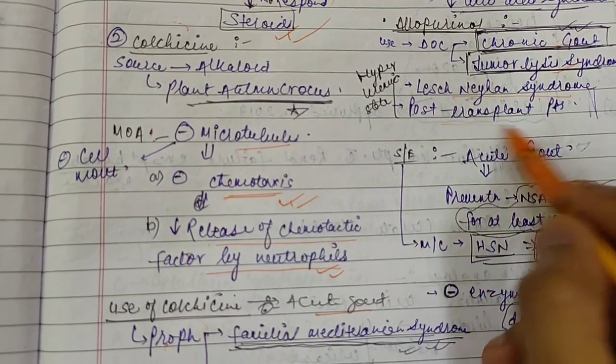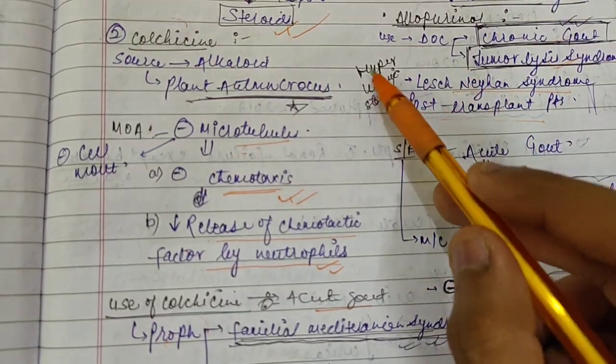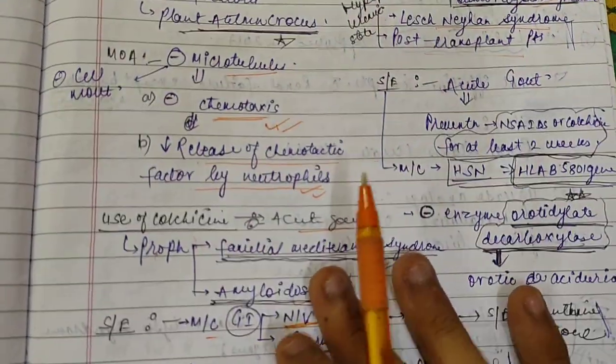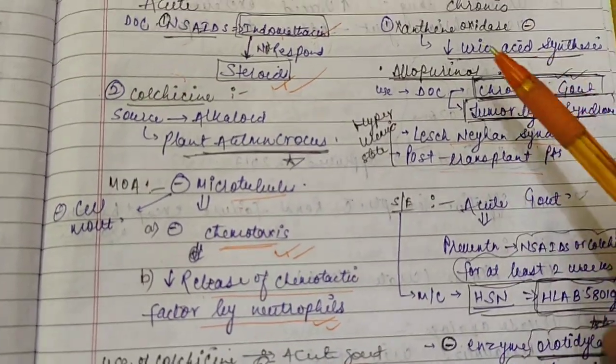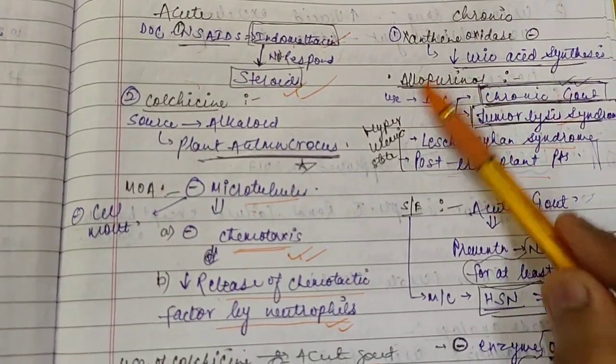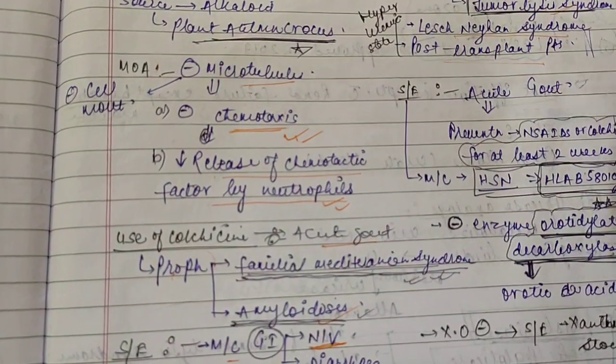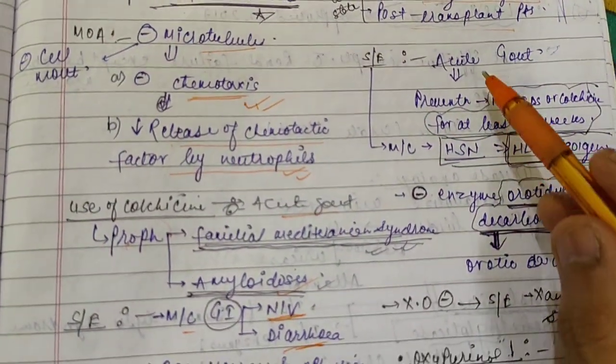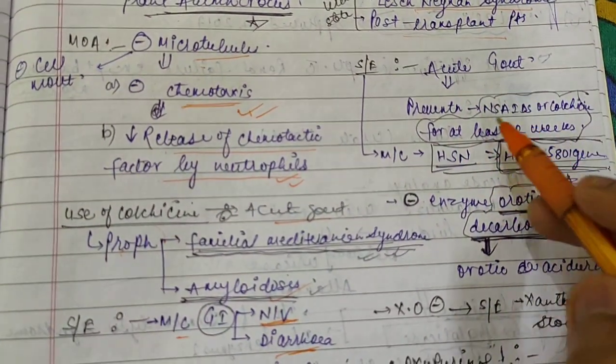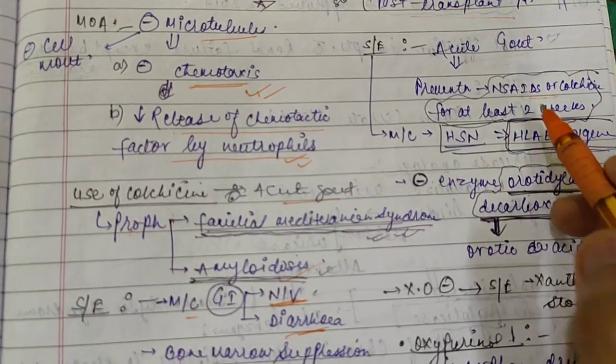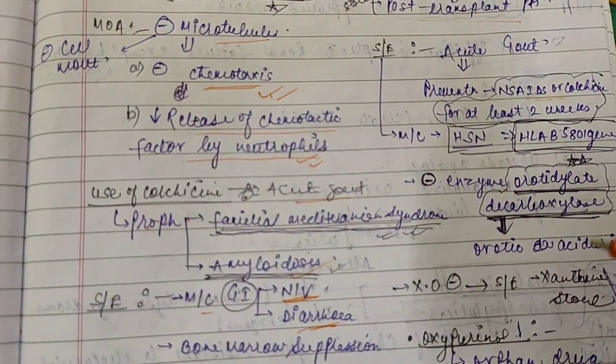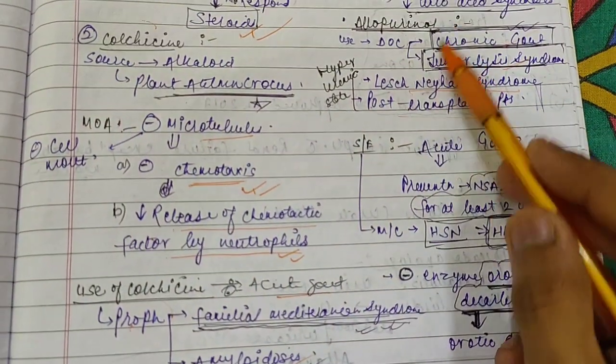Lesch-Nyhan syndrome and post-transplant patients because in these patients there will be hyperuricemic state. Now, what are the side effects? The side effect is acute gout. Very interesting point: these drugs are used for gout and they also cause a side effect of acute gout. Now, to prevent this acute gout we can use NSAIDs or colchicine for at least two weeks because there is profound acute gout when you start treatment with allopurinol.